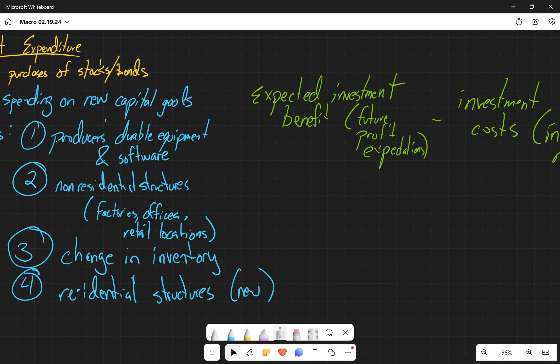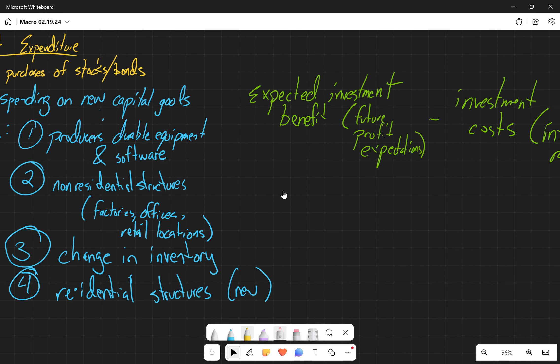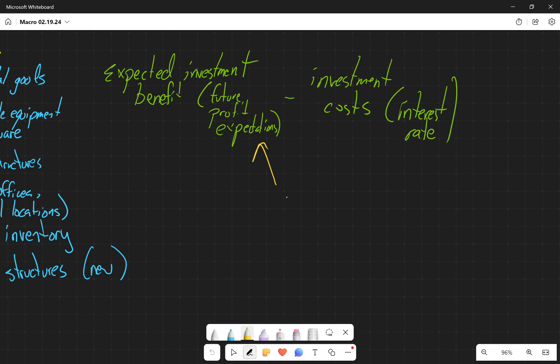When we talked about investment expenditure, we talked about how there are two determinants of investment expenditure: the expected profit rate in the future and the interest rate today. So these are the determinants of investment spending.